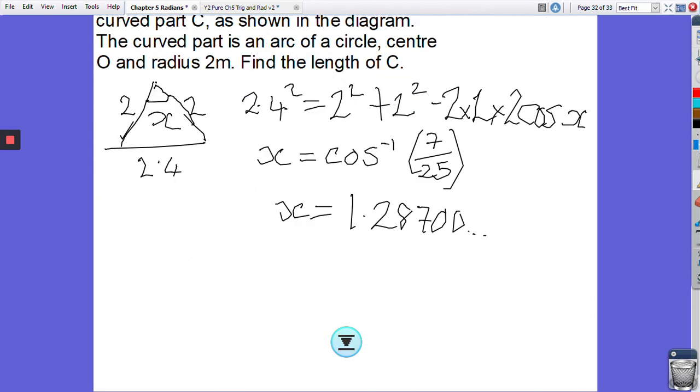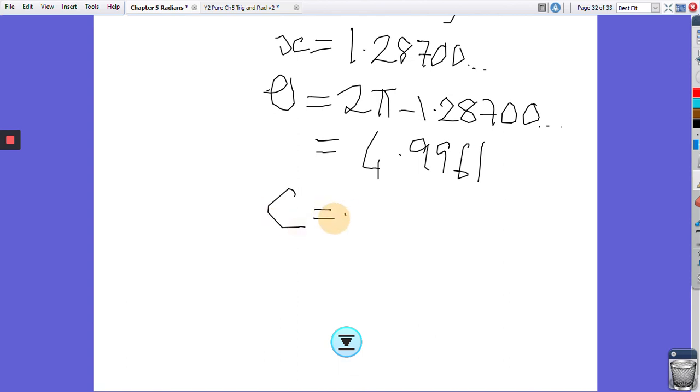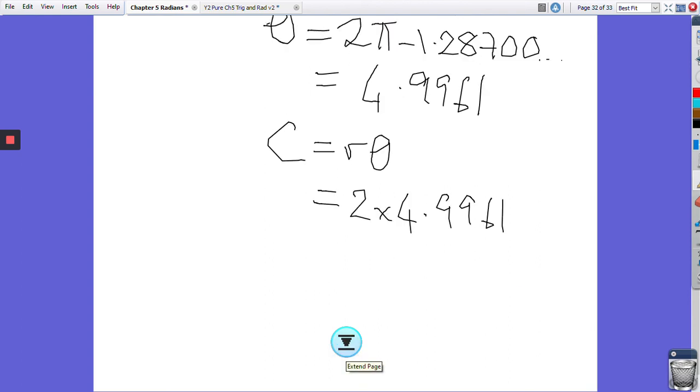Then, as we said previously, theta equals 2π minus 1.28700, which equals 4.9961. And then C equals R theta, which is 2 times 4.9961, which is 9.9922 meters. It's not too bad an example, I hope.